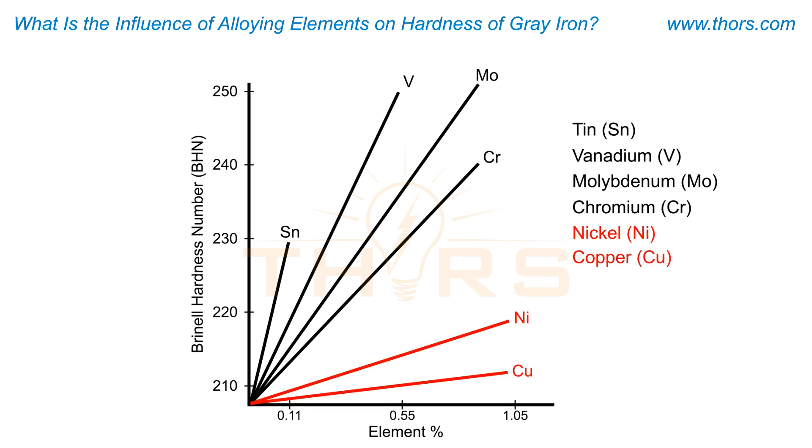Each of these elements must be present at approximately 1% to significantly influence the hardness of the casting.